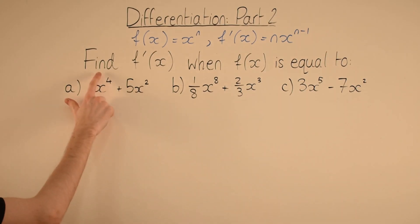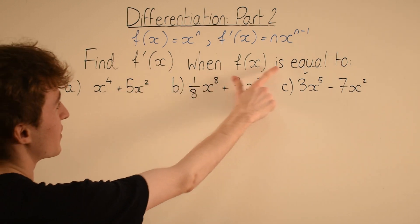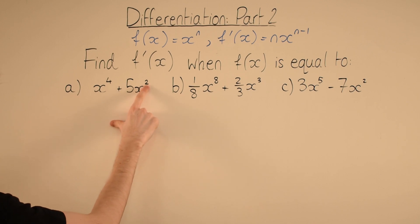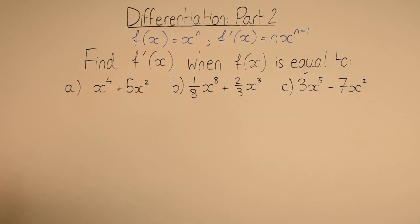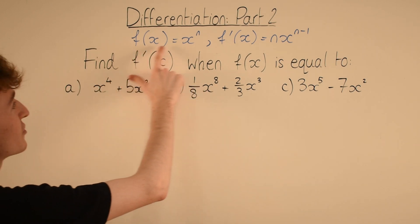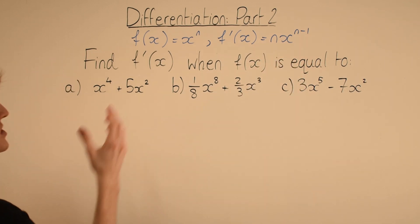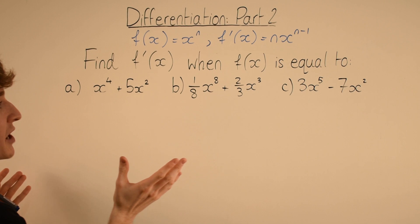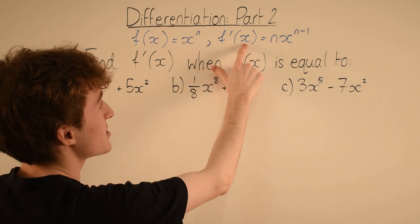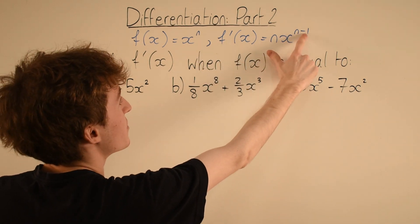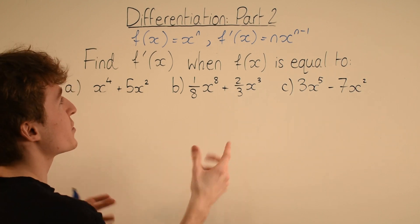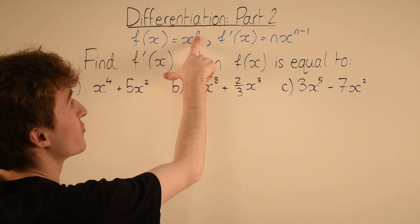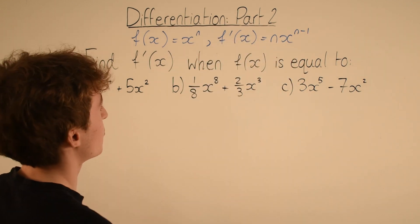We've been asked to find f'(x). In order to differentiate, we need to remember our basic rule: if f(x) is equal to x to the n, where n is any power, then f'(x) is nx to the n minus 1. In other words, we bring the n down, and then we subtract 1 from the power.